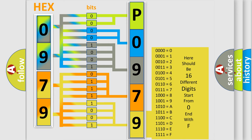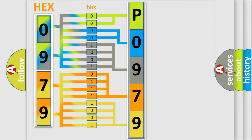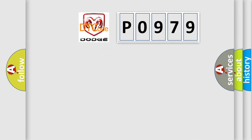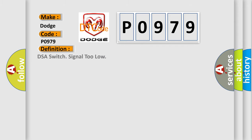We now know in what way the diagnostic tool translates the received information into a more comprehensible format. The number itself does not make sense to us if we cannot assign information about what it actually expresses. So, what does the diagnostic trouble code P0979 interpret specifically for Dodge? The basic definition is: DSA switch signal too low.